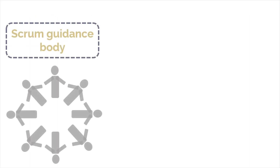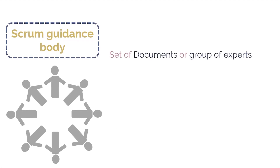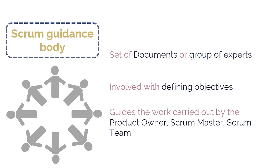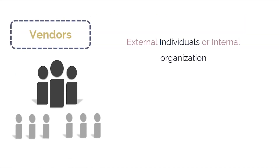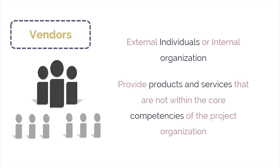Second is the Scrum guidance body, also referred to as the SGB. It is an optional role consisting of a set of documents or a group of experts, typically involved in defining objectives related to quality, government regulations, security, and other key organizational parameters. This Scrum guidance body guides the work carried out by the product owner, Scrum master, and Scrum team. The next non-core role is played by vendors — external individuals or internal organizations that provide products or services not within the core competencies of the project organization.